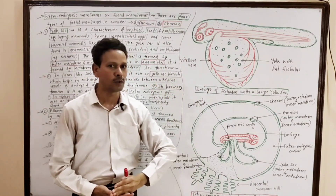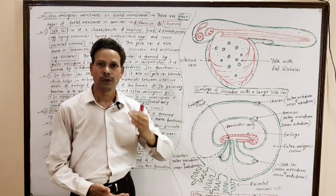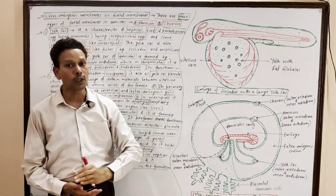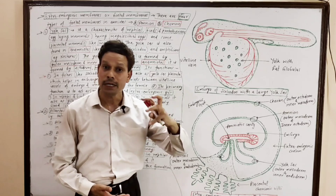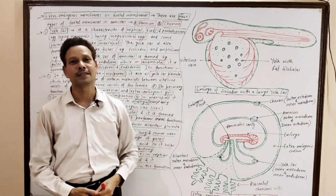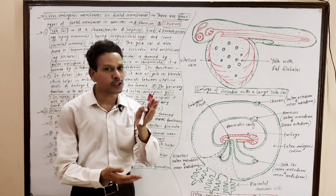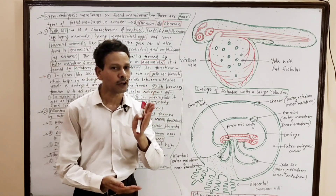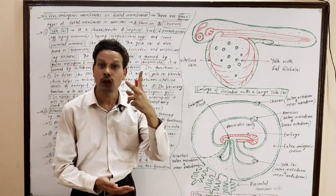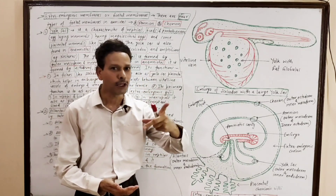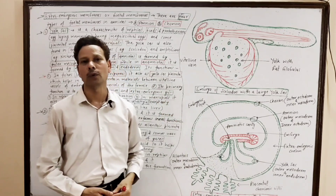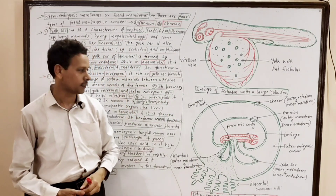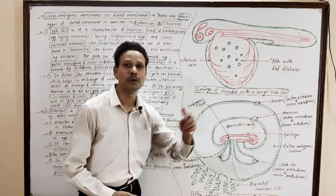In this lecture of developmental biology, we will discuss extra embryonic coats, also called extra embryonic membranes or fetal membranes. On the basis of these extra embryonic coats, vertebrates are grouped into two categories: amniotes and anamniotes.